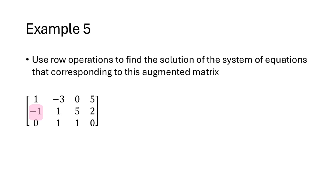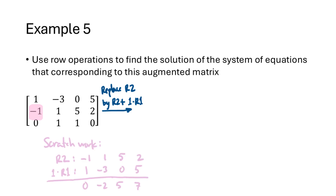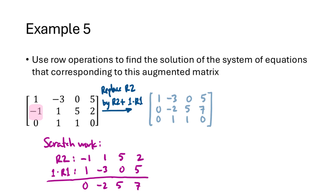Our initial goal is to eliminate all occurrences of x1 from every equation except the first. The third equation already has a 0 in the bottom-left corner, so no x1 to eliminate there. We have a negative 1 in row 2 that we need to eliminate, so we use a replacement operation. We don't need to multiply row 1 by anything, so we simply add row 1 to row 2 to get the new row 2: 0, negative 2, 5, 7.